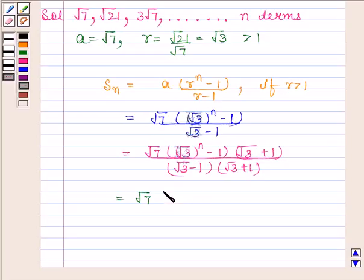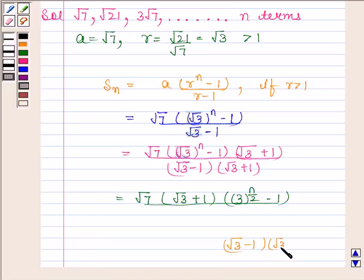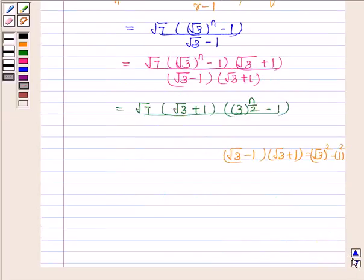The denominator root 3 minus 1 into root 3 plus 1 is equal to root 3 squared minus 1 squared by using the identity a squared minus b squared, and this is equal to 3 minus 1, which is equal to 2. So we have 2 in the denominator.